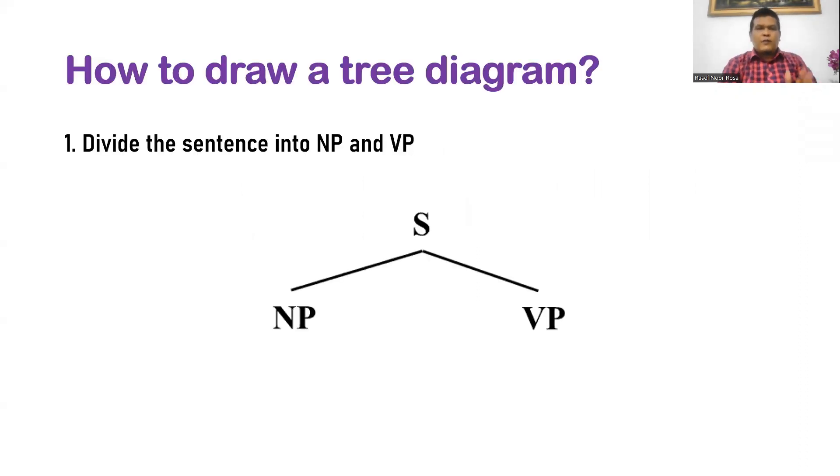First, divide a sentence into noun phrase and verb phrase, or NP and VP. All of the tree diagrams begin with classification or division of a sentence into NP and VP.